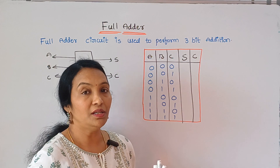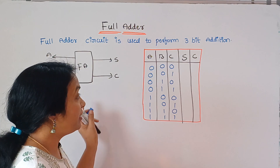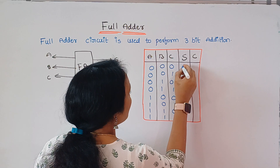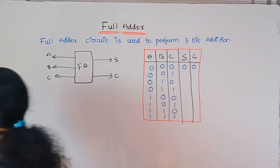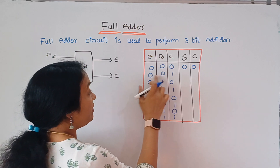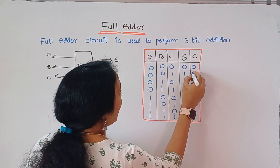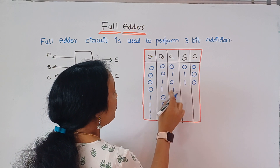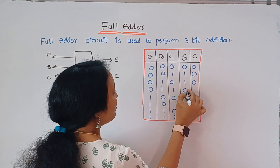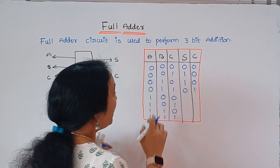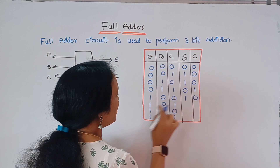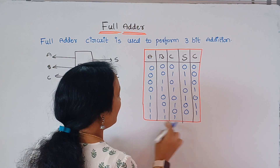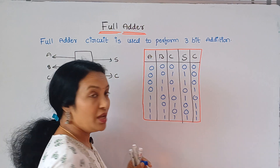Now I will fill in the output values. For the sum output: 0+0+0 gives sum 0; 0+0+1 gives sum 1; 0+1+0 gives sum 1; 0+1+1 gives sum 0 carry 1; 1+0+1 gives sum 0 carry 1; then 1+1+0 sum 0 carry 1; and 1+1+1 gives sum 1 carry 1.